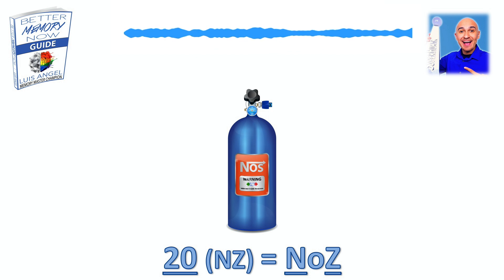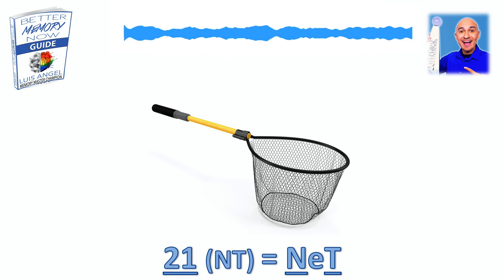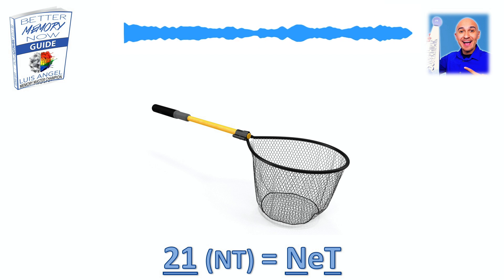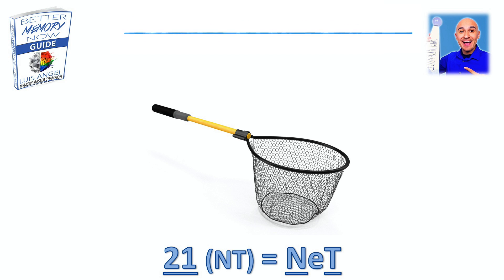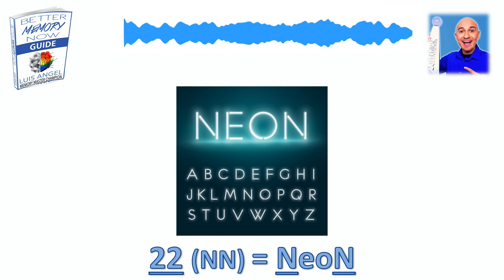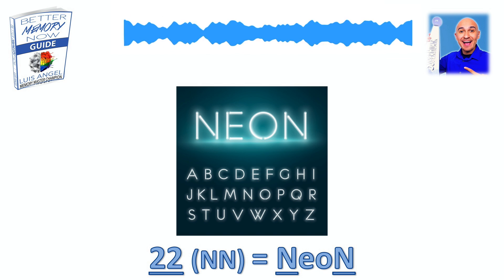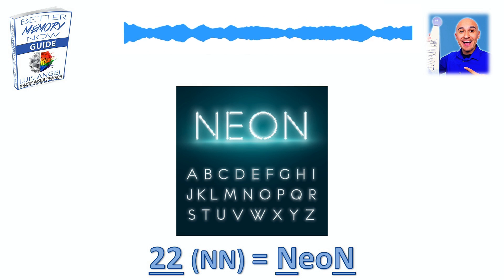We're going to go through these a little bit faster now. 21 — sit that to the top of your head because it ends in the one. For that, it's going to be T for top, and then for two, you know that's an N sound. So we throw in a vowel and we get a net. Net for 21. 22 is neon — throw in a few vowels into the Ns and you get neon sign. Picture an open neon sign, and associate that to 22.